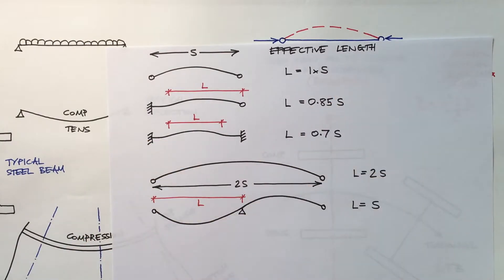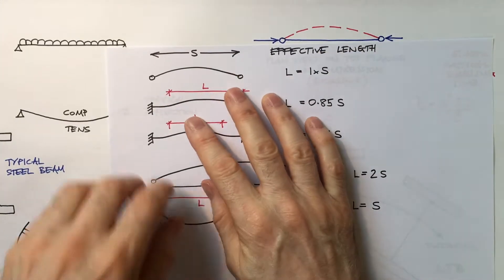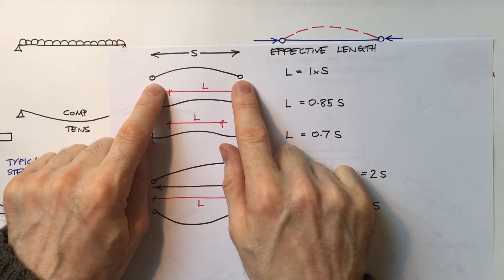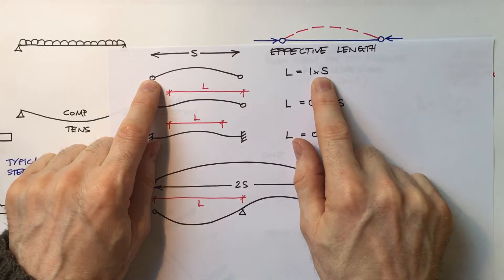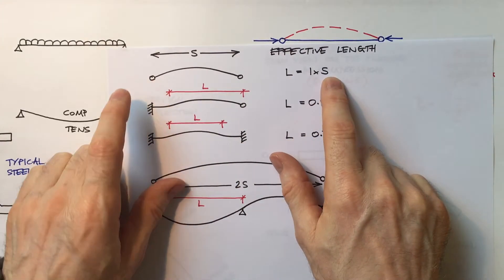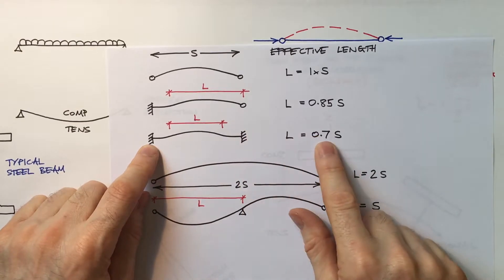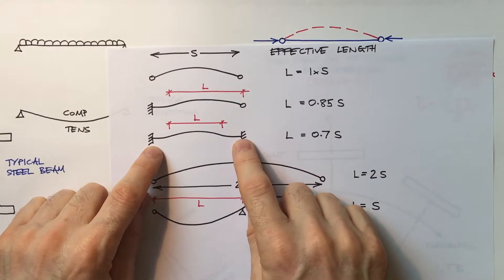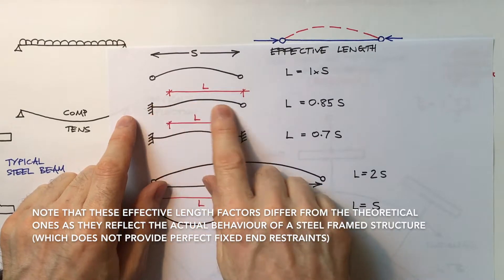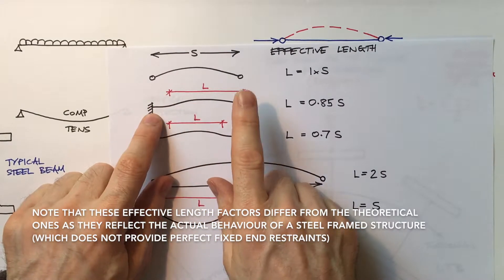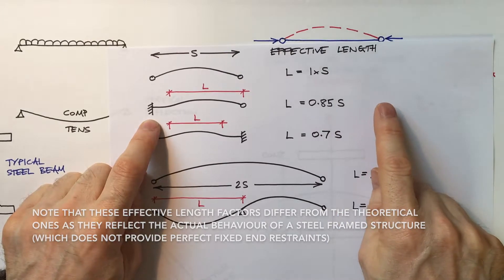So what are these effective lengths? For a pin-ended member, because it's already pinned at each end, the effective length is going to be its original span length S. For something that's fixed, it's 0.7 times the original span S. Something that's pinned and fixed, it's somewhere in between — 0.85S.